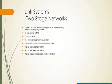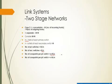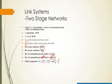The number of cross points per primary switch is given by the product of the number of inlets of each primary switch and the number of secondary switches. The number of cross points per secondary switch is given by the number of outlets of the secondary switch multiplied by the number of primary switches. Together these give the cross points per primary and per secondary switch respectively.